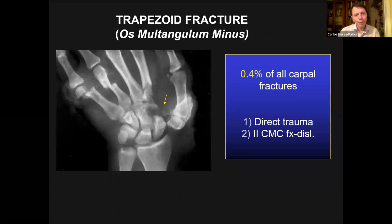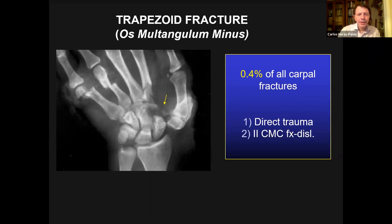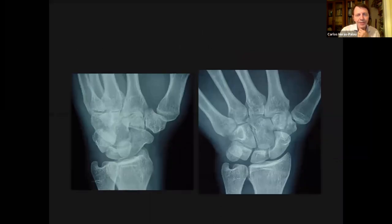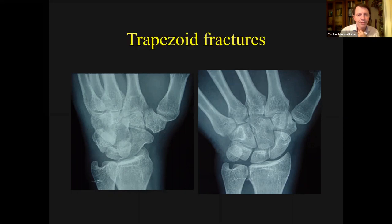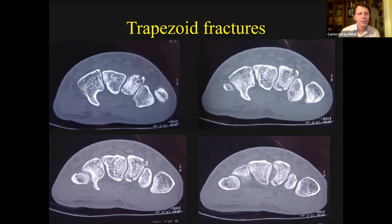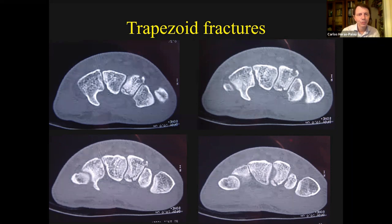A trapezoid is a polygon with four sides and none of them are parallel in my definition, though that's not everybody's definition. They are considered to be very rare — 0.4% of all carpal fractures — but I don't think they are that rare. What happens is that they're difficult to see. Even when you have two views, you have trouble seeing a fracture of the trapezoid because it is superimposed in both the PA view and the lateral, and you often need a CT scan to detect it.